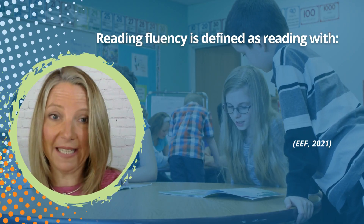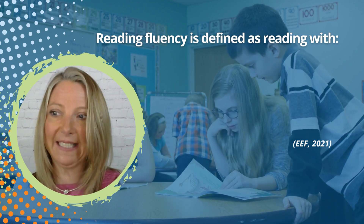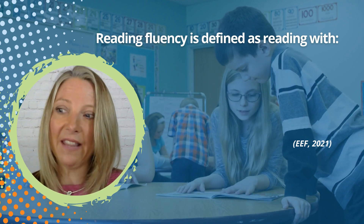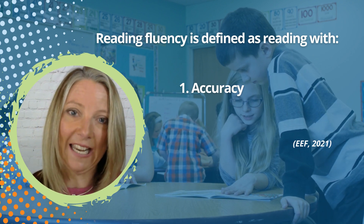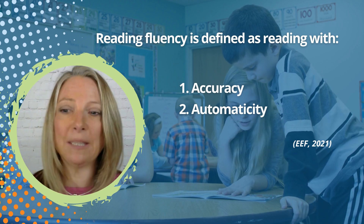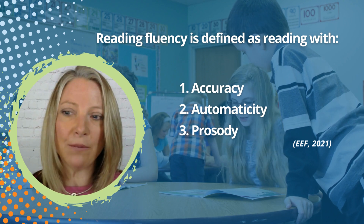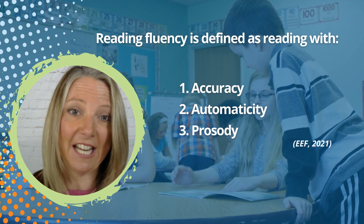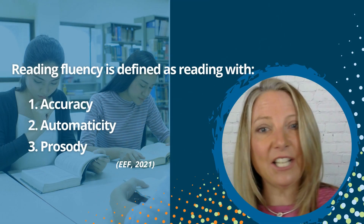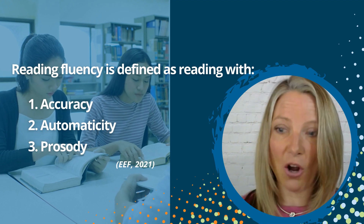In preparation for this session you might like to consider the three aspects of reading fluency. The EEF defines reading fluency as reading with accuracy — that's reading the words correctly — reading with automaticity — that's reading at an appropriate speed without great effort — and reading with prosody — that's reading with appropriate stress and intonation. If you like, it's making your reading sound like talking. In this session we're going to explore these three aspects of fluency and how each of them impacts on reading as a whole.